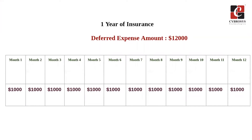Let's take an example. Say we pay $1200 at once for one year of insurance. We already pay the cost now but haven't used the service yet. Therefore we post this new expense in a prepayment account — that is our deferred expense account — and decide to recognize it on a monthly basis. So each month for the next 12 months, $100 will be recognized as an expense.